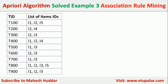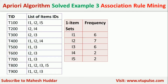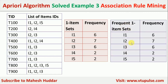We apply the bottom-up approach of the Apriori algorithm, where first we need to identify the one-itemsets. In this case, we have five unique items: I1, I2, I3, I4, and I5. Next, we find the frequency of each item. For example, I1 is bought 6 times. A frequent one-itemset is an itemset whose support is greater than or equal to the minimum support, which is 2 here. So all five one-itemsets qualify as frequent one-itemsets.